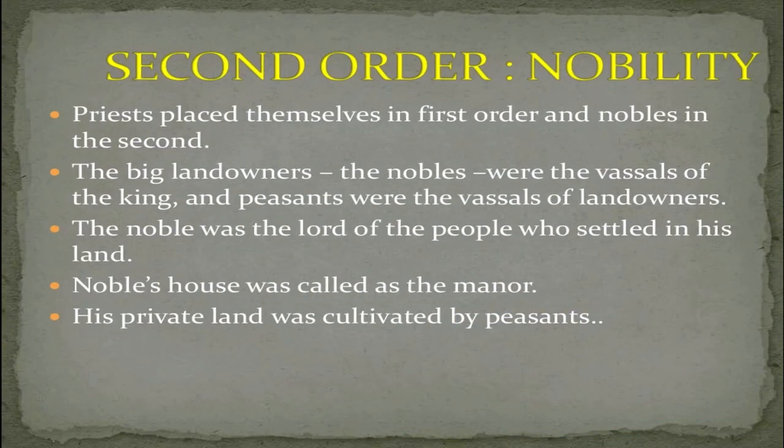Talking about the second order, i.e. nobility: the priests placed themselves in the first order and nobles in the second order. The big landowners — the nobles — were the vassals of the king, and the peasants were the vassals of the landowners. The noble was the lord of the people who settled on his land, and the noble's house was called the manor. His private land was cultivated by the peasants.